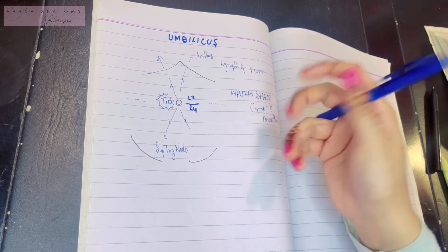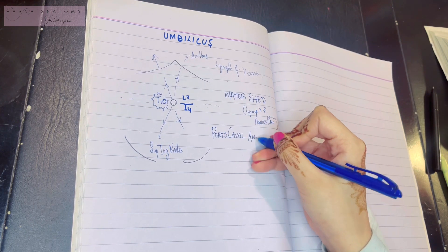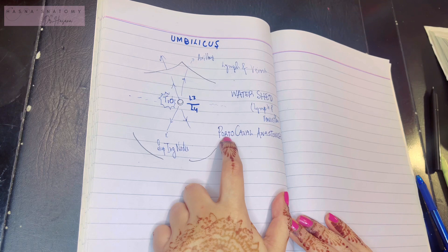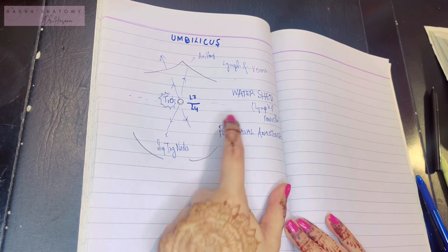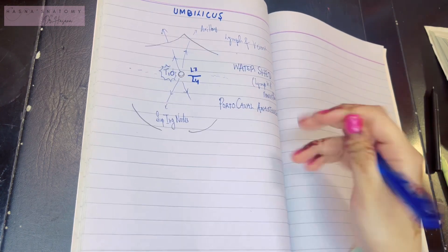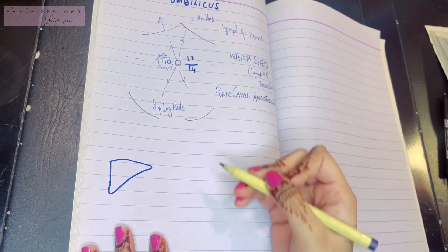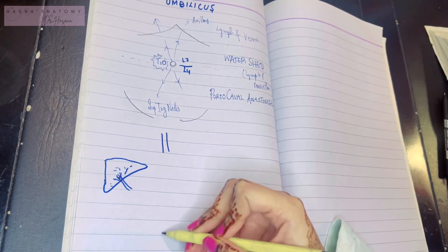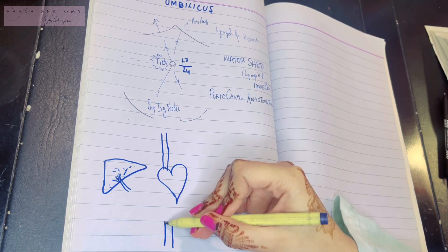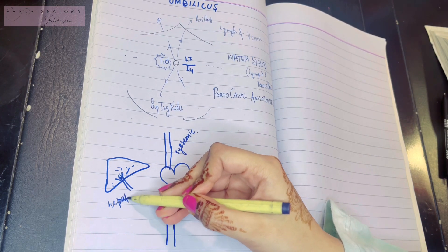The next essential point is that around the umbilicus is the zone where portocaval anastomosis takes place. 'Porto' refers to the portal vein, which goes into the liver. 'Caval' refers to the systemic veins — the superior and inferior vena cava. The portal vein normally goes into the liver supplying it with blood, while the systemic veins go directly to the heart via the superior and inferior vena cava. The portal vein is a hepatic vein — it's for the liver.